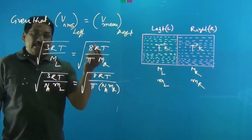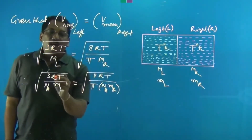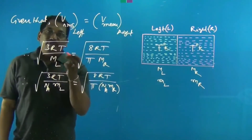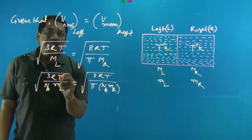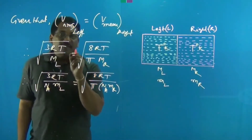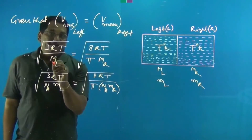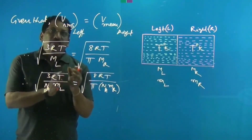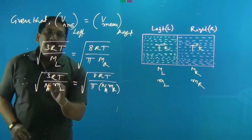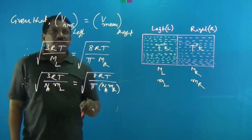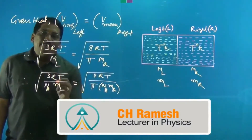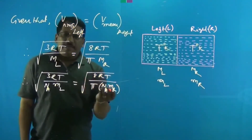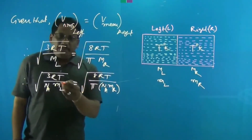We also note that R divided by N_A equals Boltzmann's constant K. So the formula for V_RMS can also be written as √(3KT / m), where small m is the mass of each molecule. Similarly, the mean speed formula can be expressed in terms of K. However, we can continue with the capital R form for this problem.